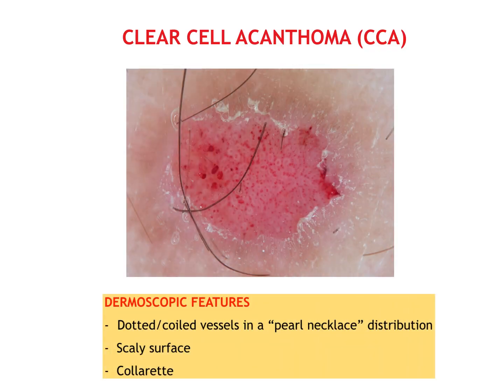Among pink tumors, clear cell acanthoma is one of the most characteristic because it shows very typical dermoscopic features like dotted vessels with the pearl necklace appearance, scaly surface and collarette.